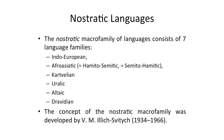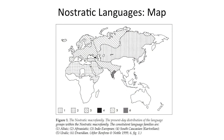There is a theory of Nostratic languages that groups languages in several families, developed by Ilyich-Svitich. The map here shows how these Nostratic languages would be distributed across the Old World according to this theory.